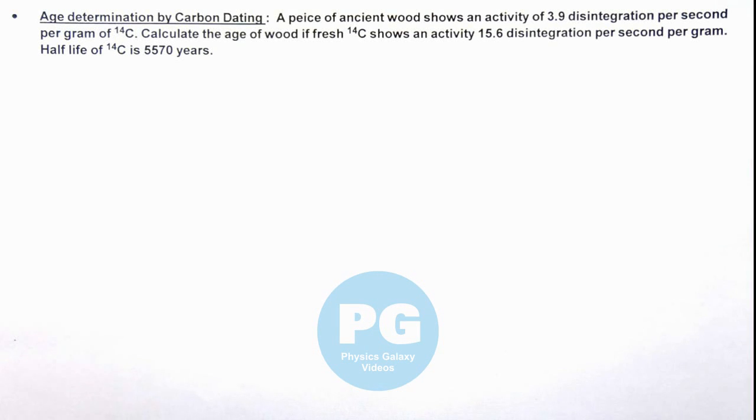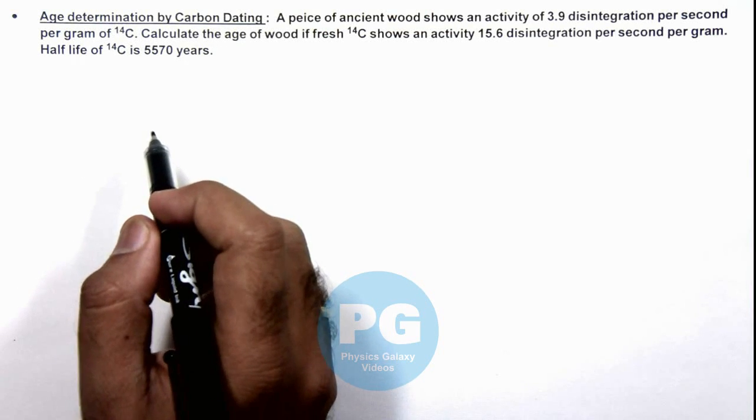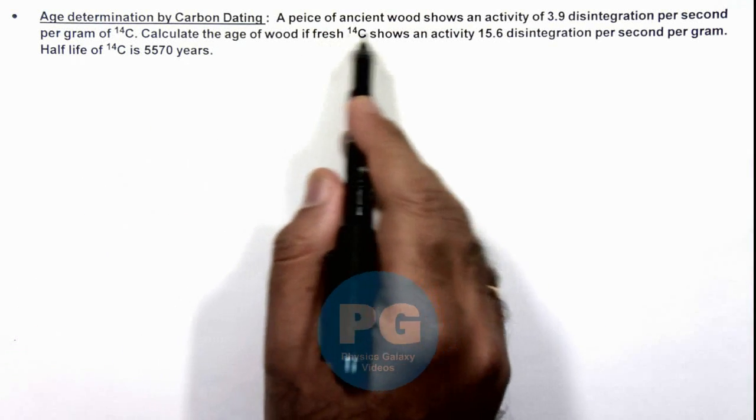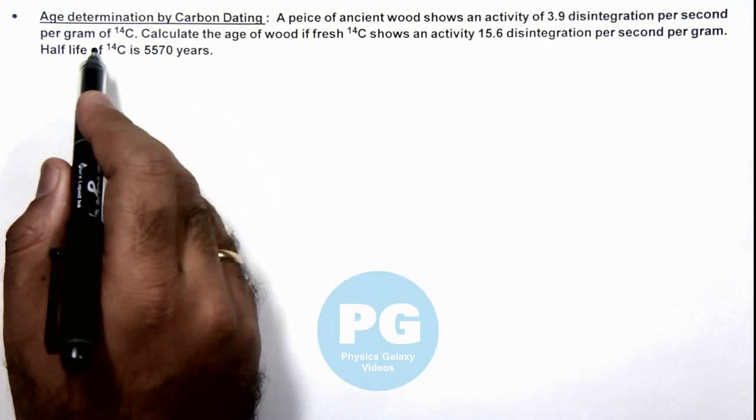In this illustration we'll analyze the age determination by carbon dating. Here we are given that a piece of ancient wood shows an activity of 3.9 disintegration per second per gram of carbon-14.